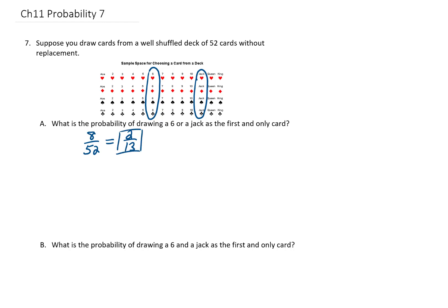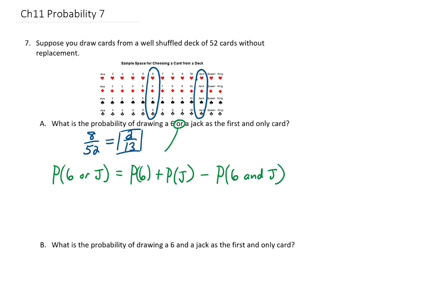There's another way to look at this problem. We know a formula for OR problems that goes like this: the probability of drawing a 6 or a jack is the probability of drawing a 6 plus the probability of drawing a jack minus the probability of drawing a 6 and a jack. So how many ways can we draw a 6 out of this deck? Well, there are 4 sixes out of 52 cards. The same is true for a jack — the probability of drawing a jack is 4 out of 52.